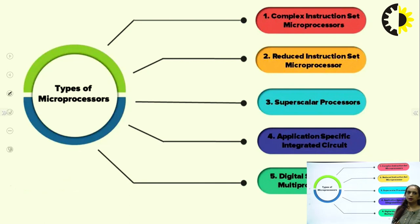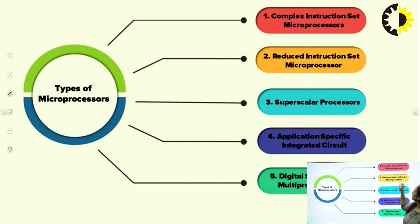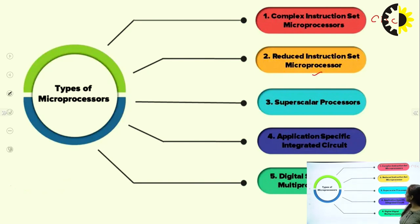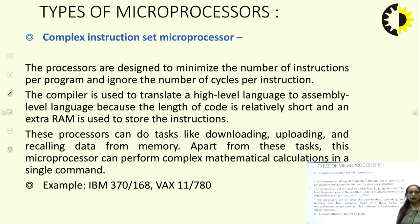Microprocessors can be categorized depending on their instruction set or application. First is CISC — Complex Instruction Set Microprocessor. These processors are designed to minimize the number of instructions per program and ignore the number of cycles per instruction. Each instruction takes some clock cycles.